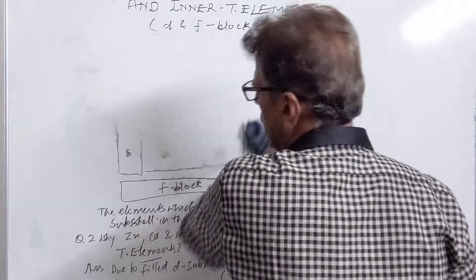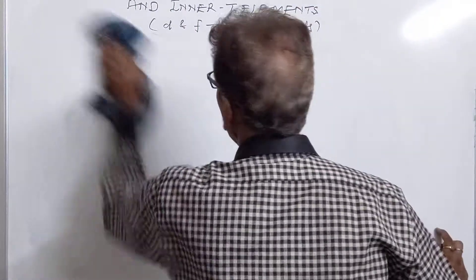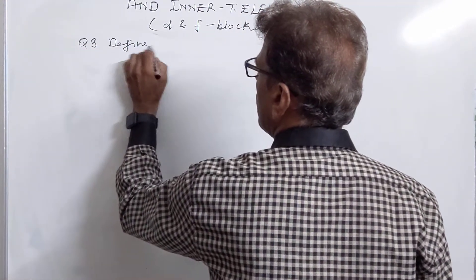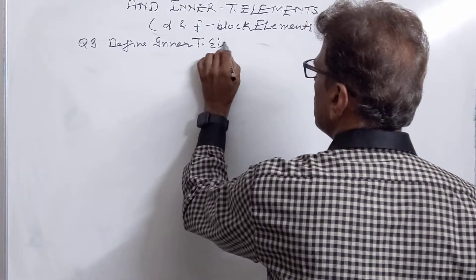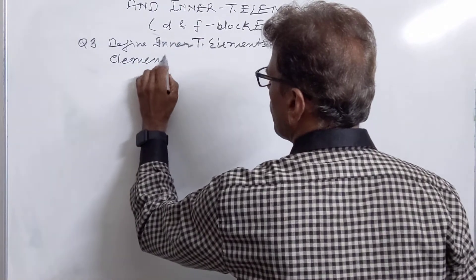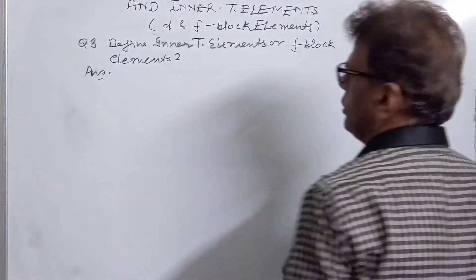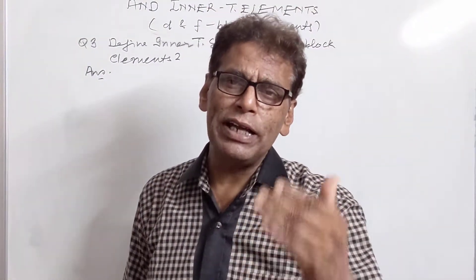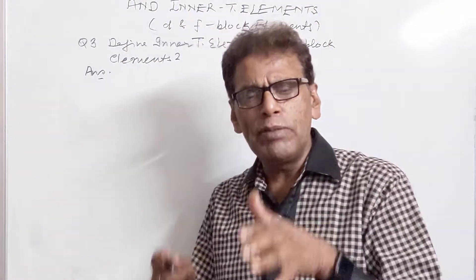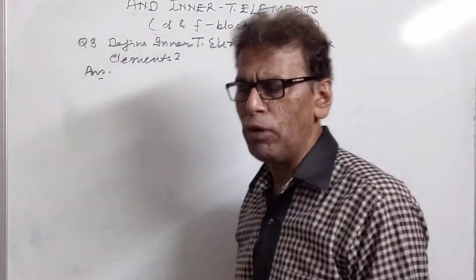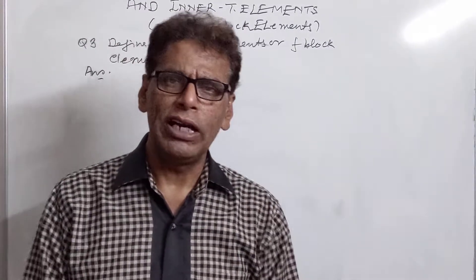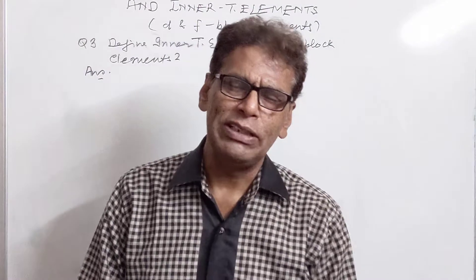Question number 3: what are inner transition elements, or F block elements? As the name suggests, inner transition elements are situated inner to the transition elements. In order to prevent the expansion of the periodic table, these elements have been placed at the bottom of the periodic table, just below S, P, D, and F block. There are two series: the first is called the lanthanoid series, also called the 4F series, and the second is called the actinoid series, also called the 5F series.